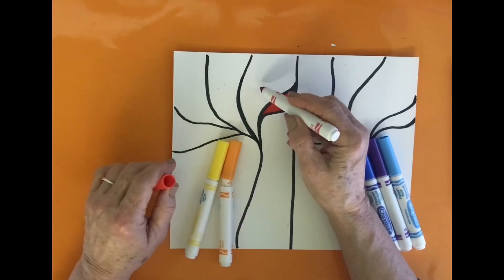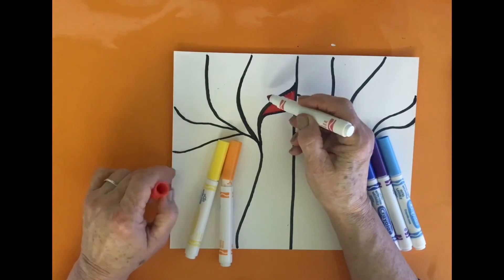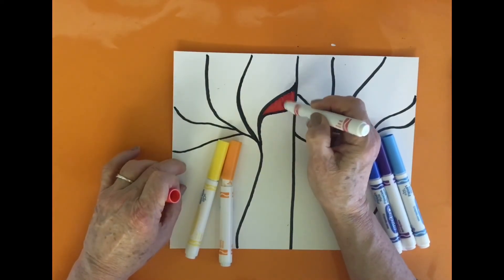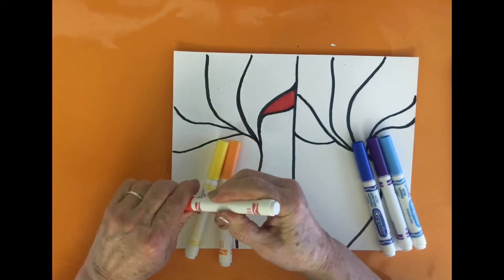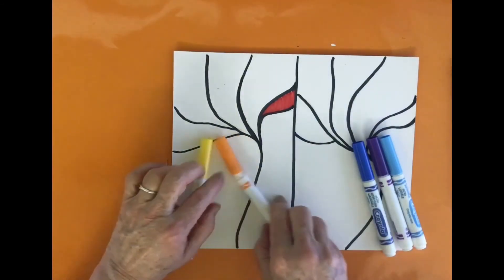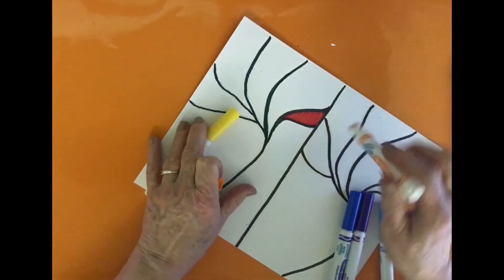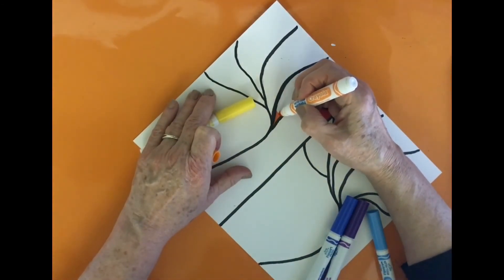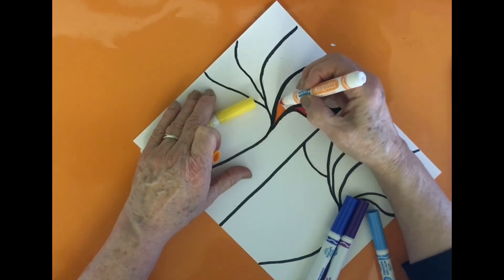All right, so I need to make a decision about what to color this section here, and I don't want it to be red because then I'd have red touching red. So I think maybe I'll use orange, and I can turn my paper this way, make it a little bit easier if I'm going to be laying the color from the marker on in this direction.